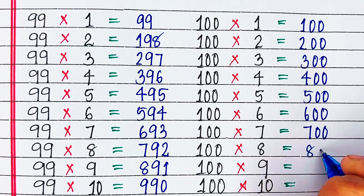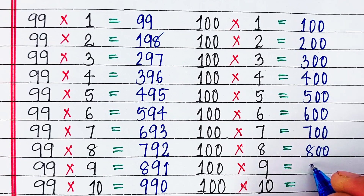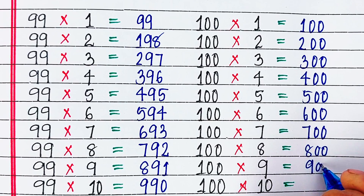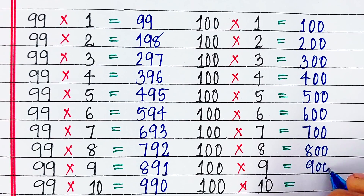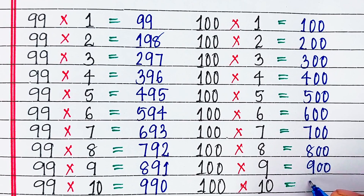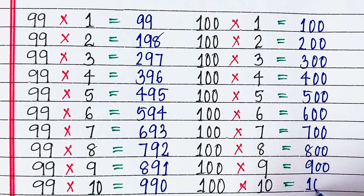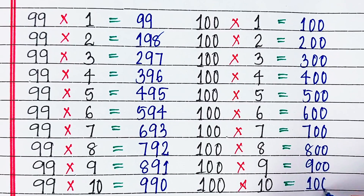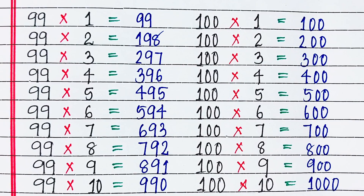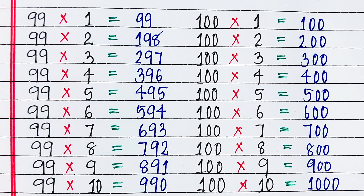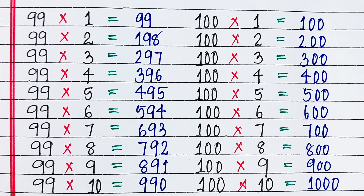Hundred sixes are six hundred. Hundred sevens are seven hundred. Hundred eights are eight hundred. Hundred nines are nine hundred. Hundred tens are one thousand.